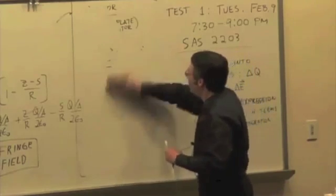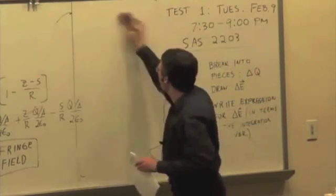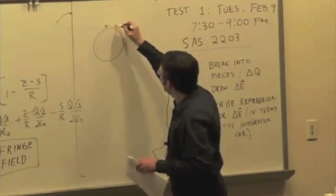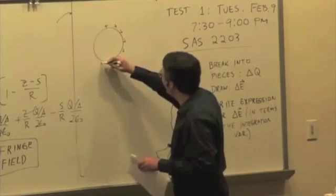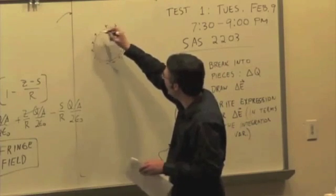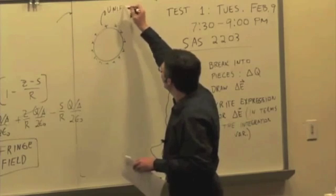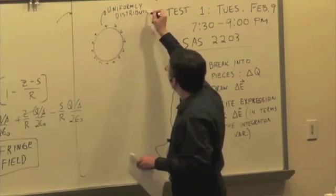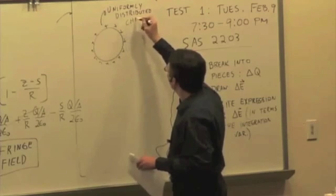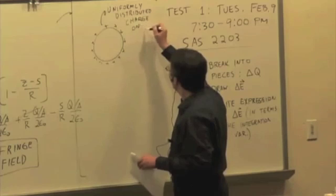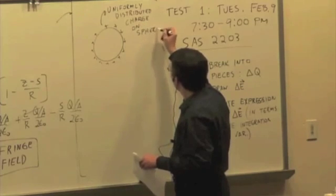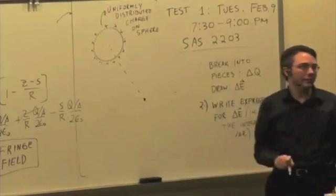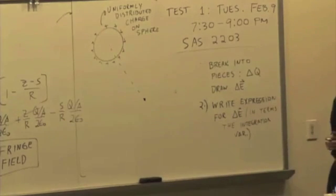And that is the field of a uniformly charged sphere. So here's a positively charged sphere that has a uniform charge distribution over its surface - uniformly distributed charge on a sphere. Outside, what's the electric field look like? What do we use for the magnitude of the field outside the sphere?